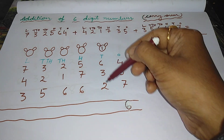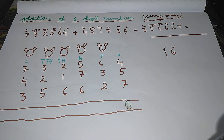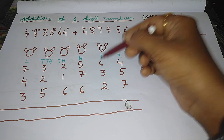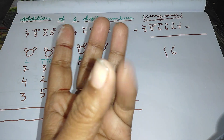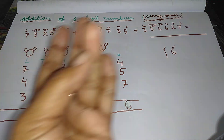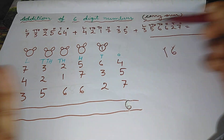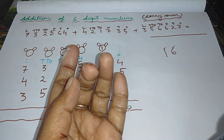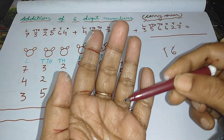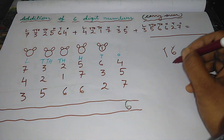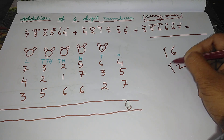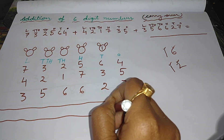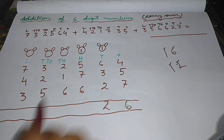Now add the digits that belong to ten's place. The first is one, count one. The second is six, count six more. Then three, count three more. Then two, count two more — giving a total of twelve lines. One is the first digit and two is the last digit. So write two in ten's column and carry one into the next column, that is the hundred's column.